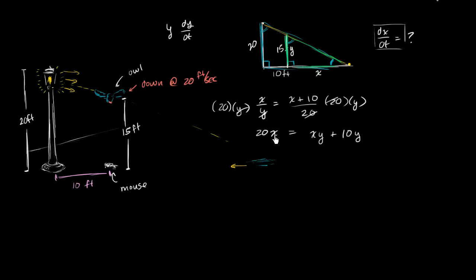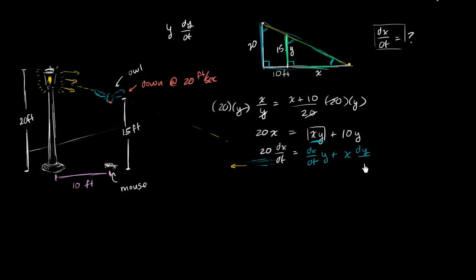Taking the derivative of both sides with respect to time: the left side gives 20(dx/dt). On the right side we need the product rule for xy, which gives (dx/dt)·y + x·(dy/dt). Then the derivative of 10y with respect to t is simply 10·(dy/dt). So we have the relationship between dx/dt, dy/dt, x, and y.